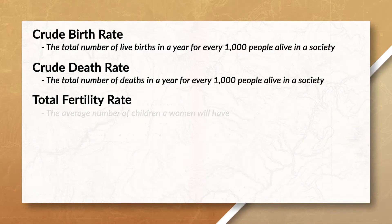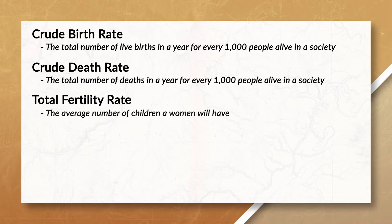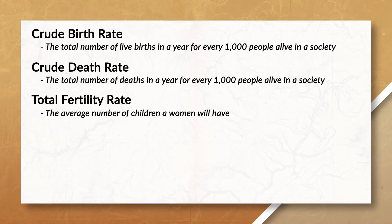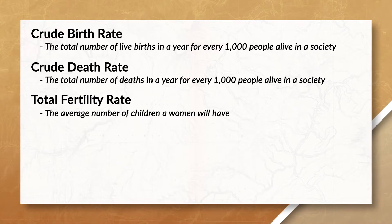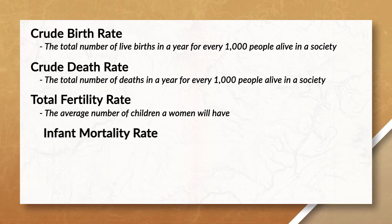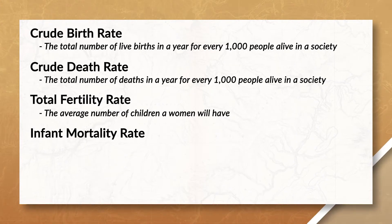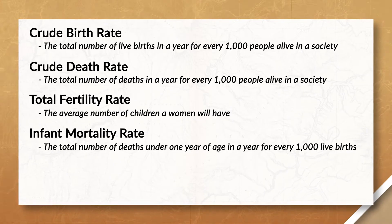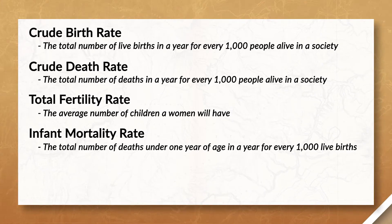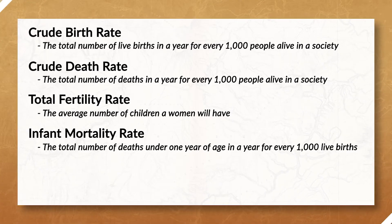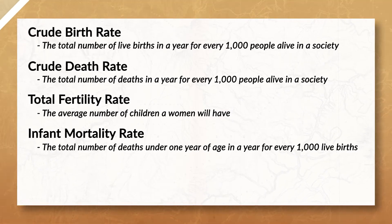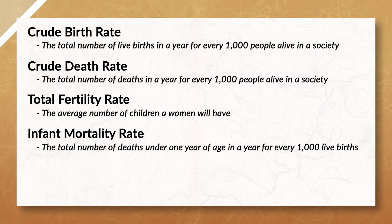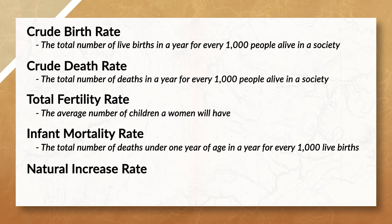Total fertility rate is the average number of children a woman will have in her lifetime. Next is infant mortality rate, which is the total number of deaths for people under the age of one in a year for every 1,000 live births.